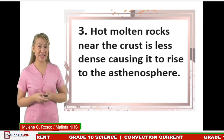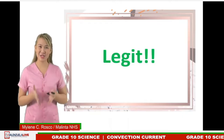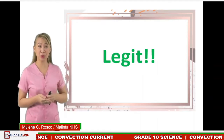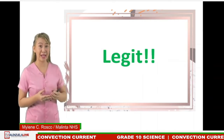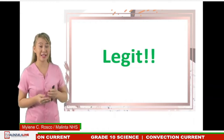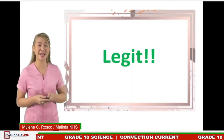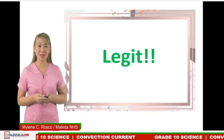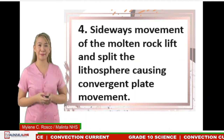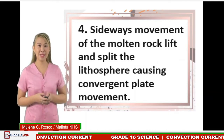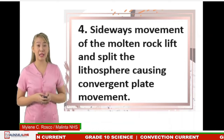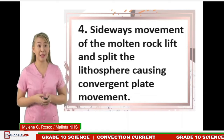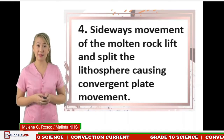The correct answer is legit. The convection current is produced due to heat coming from the core, and molten rocks near the core are hotter, causing them to rise towards the asthenosphere. Next, statement number four: Sideways movement of molten rocks splits the lithosphere, causing convergent plate movement. Is it legit or fake news?